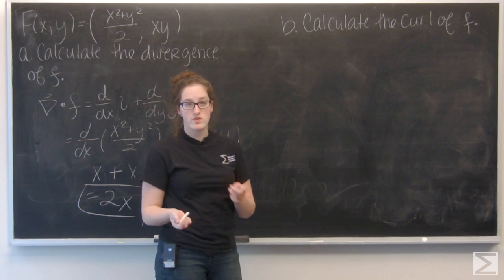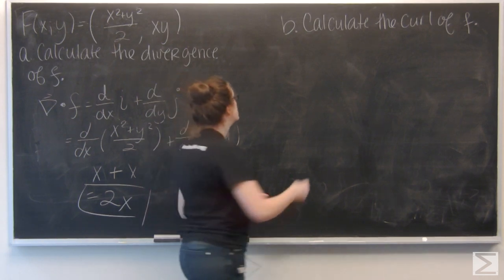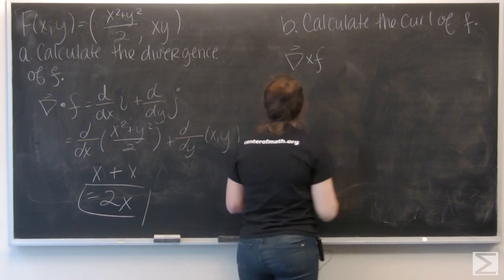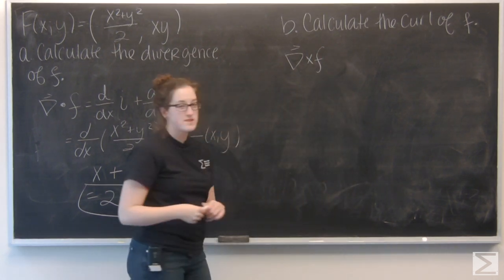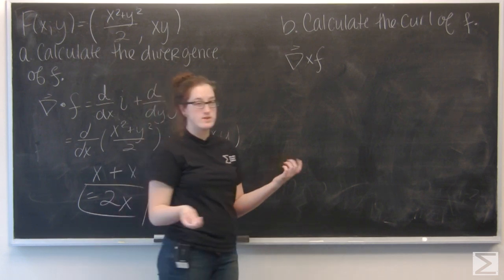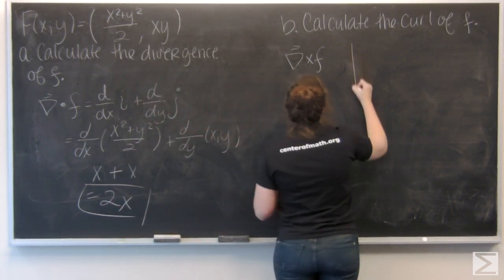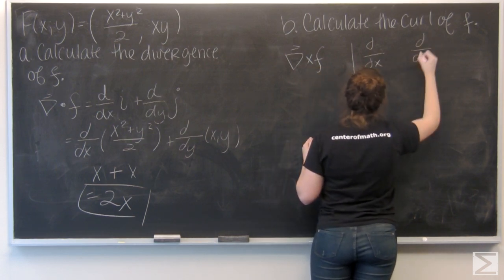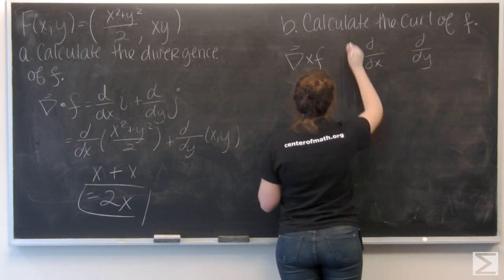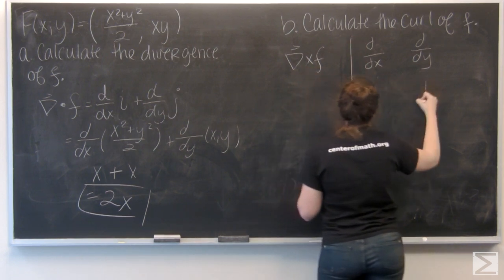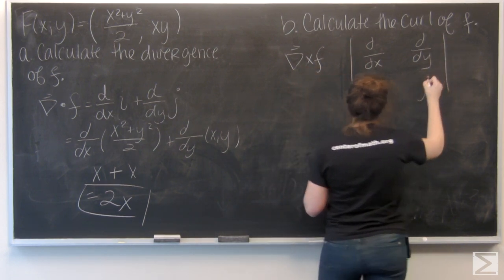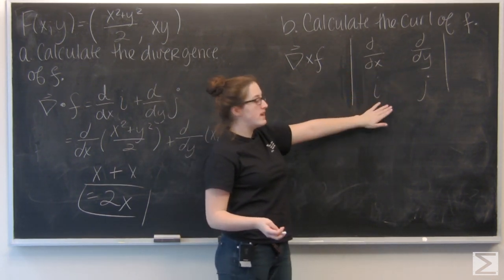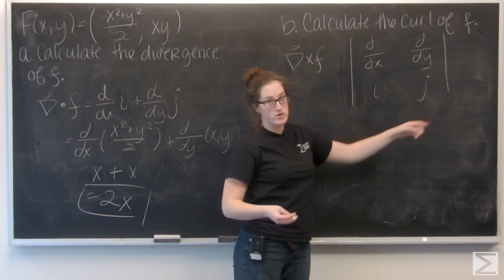Curl is the cross product of the gradient vector with f. And for a two-dimensional case, I like to think of it as taking the determinant of a 2x2 matrix. Where you have the gradient partial derivatives with respect to x and y on the top, and then the i component and the j component on the bottom.